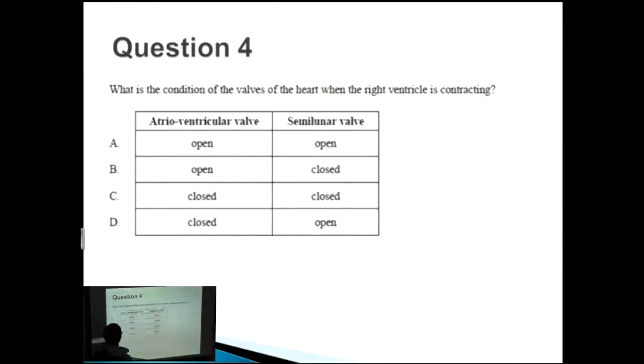Question number four: what is the condition of the valves of the heart when the right ventricle was contracting? The way that you can think of it from the previous diagram is that you have valves, and this is our right ventricle here.